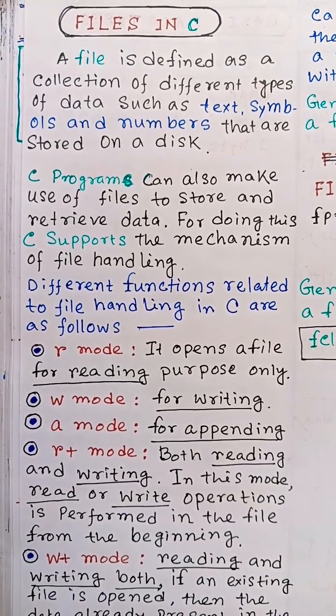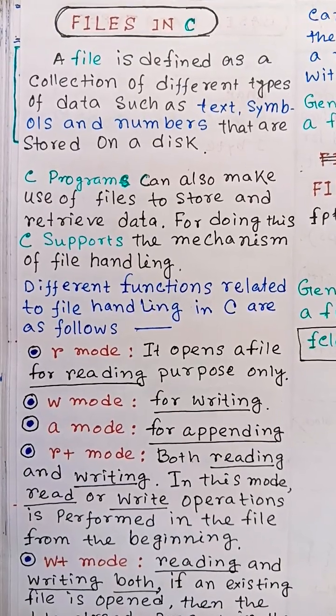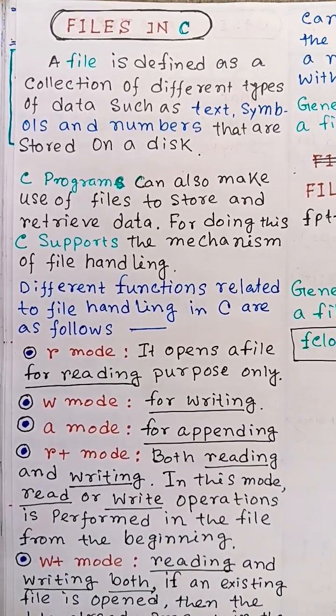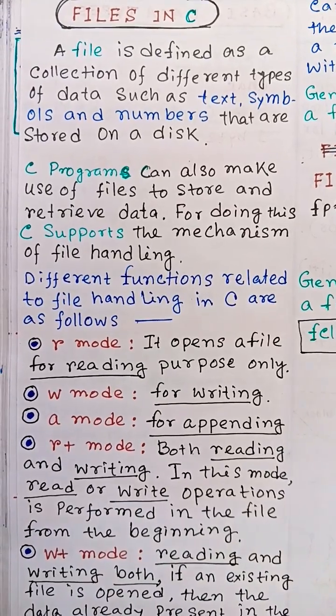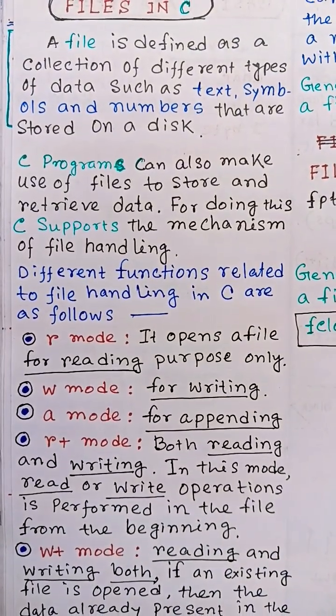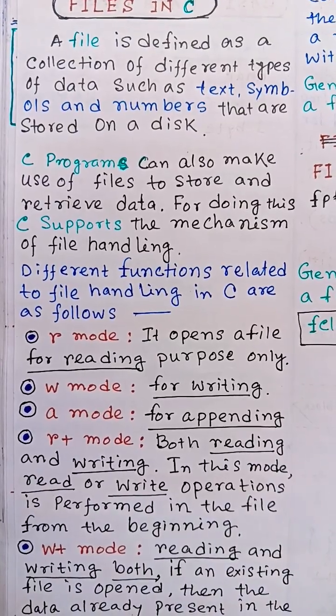I am going to discuss file handling in C programming. What is a file? A file is a container of different types of data such as text, symbols and numbers that are stored on a disk.